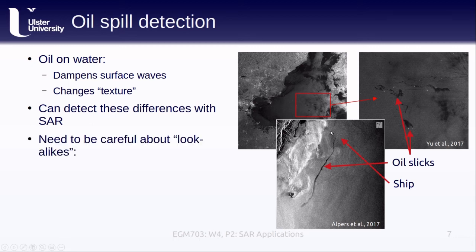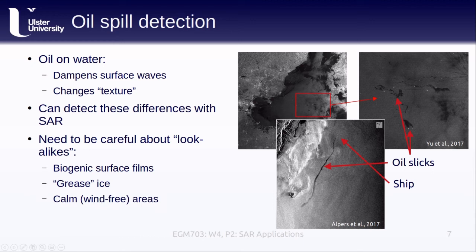We do need to be careful about potential look-alikes. As with floodwaters, there can be other reasons for dark, smooth areas in a SAR image. For example, some biogenic surface films, which are not human-caused oil spills, can change the texture of the water surface and therefore appear dark. Grease ice, one of the formation stages of sea ice, can cause a similar effect. And of course, we can also have calm, wind-free areas due to different wind patterns. All of these are different things to keep in mind when attempting to classify oil spills.